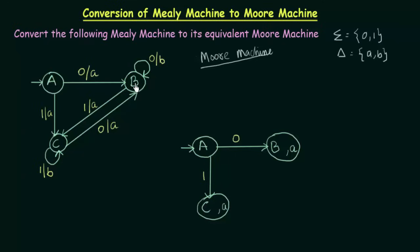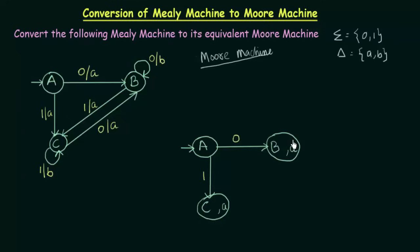Now coming to state B — on input 0, state B goes to B itself and it gives the output B. If I send B to B itself on input 0, I have to associate output B to the state it goes to. But I already have an output A associated to state B, so I cannot associate output B to this state B.